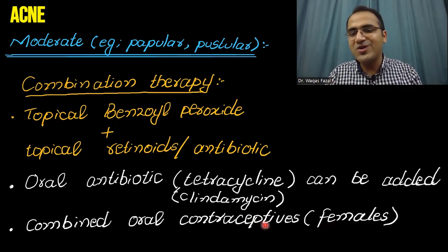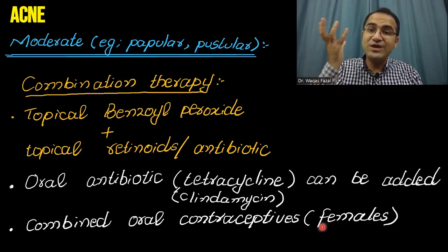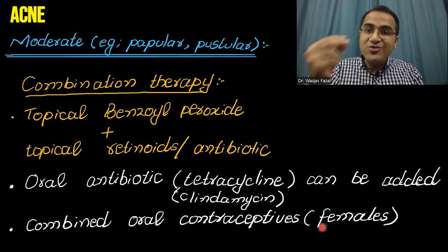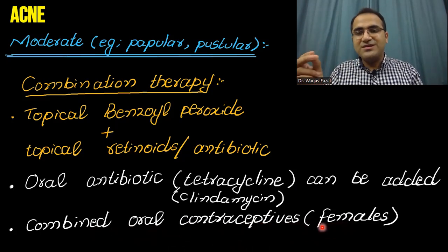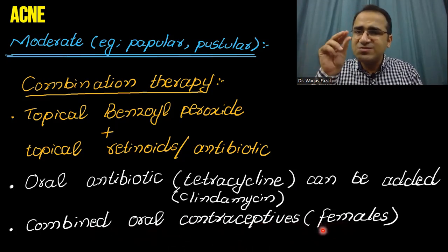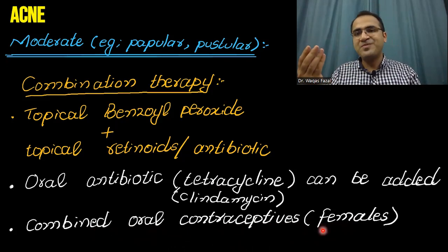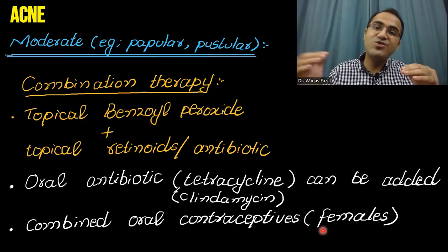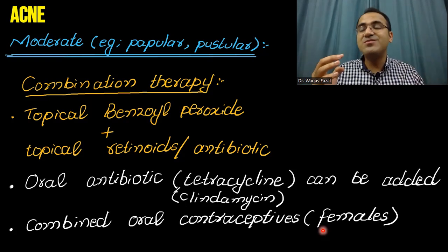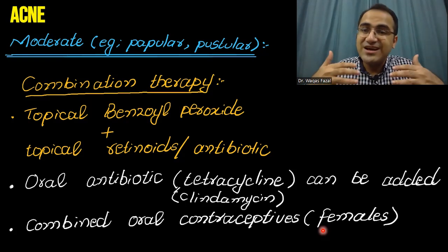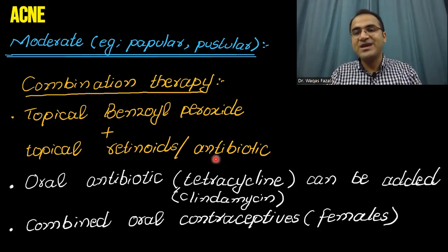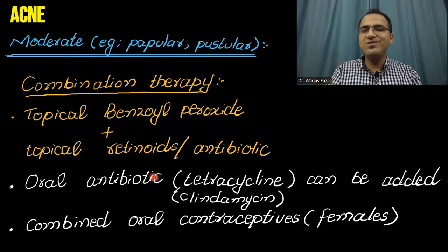How can combined oral contraceptives decrease acne? Combined oral contraceptives include estrogen and progesterone. Acne is caused by androgens — a male hormone present in small amounts in females as well. When you give female hormones estrogen and progesterone, they dominate over androgens and reduce the amount of androgens, resulting in resolution of acne. So combination therapy includes topical benzoyl peroxide with a retinoid used as an antibiotic, with oral antibiotic added as well.